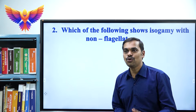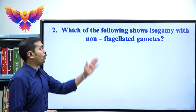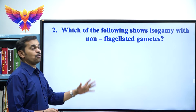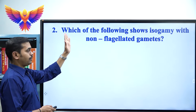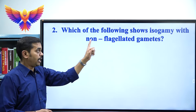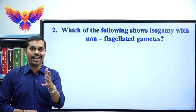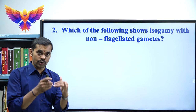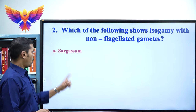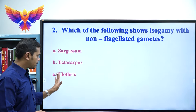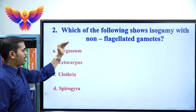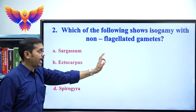Question 2: Which of the following shows isogamy with non-flagellated gametes? Isogametes are gametes which are similar in size, shape, and structure, and their fusion is called isogamy. Options: A) Sargassum, B) Ectocarpus, C) Ulothrix, D) Spirogyra. The correct option is D, Spirogyra.